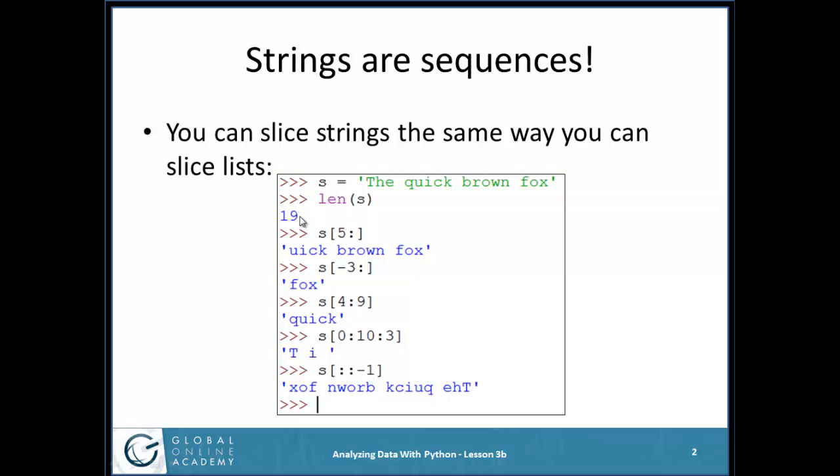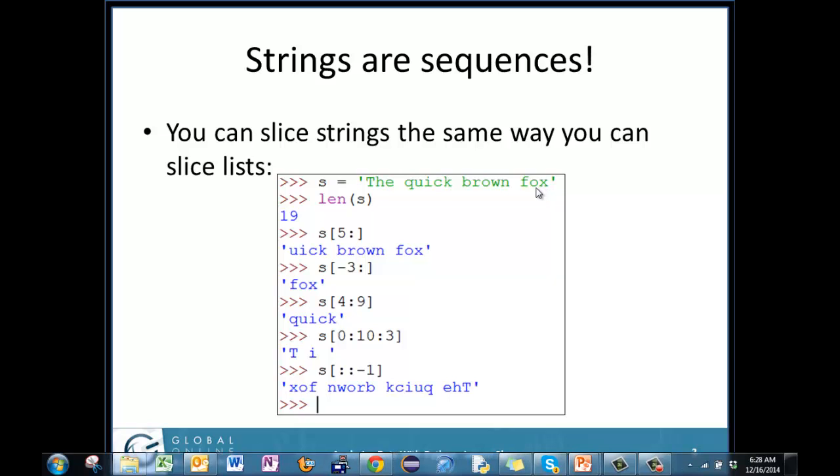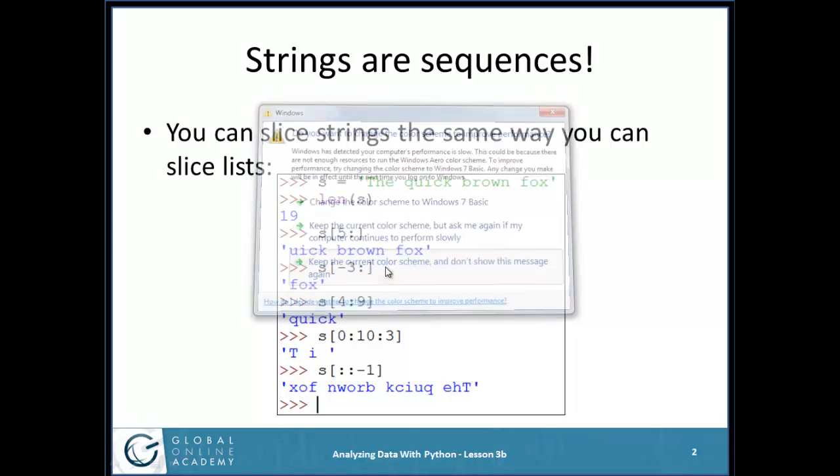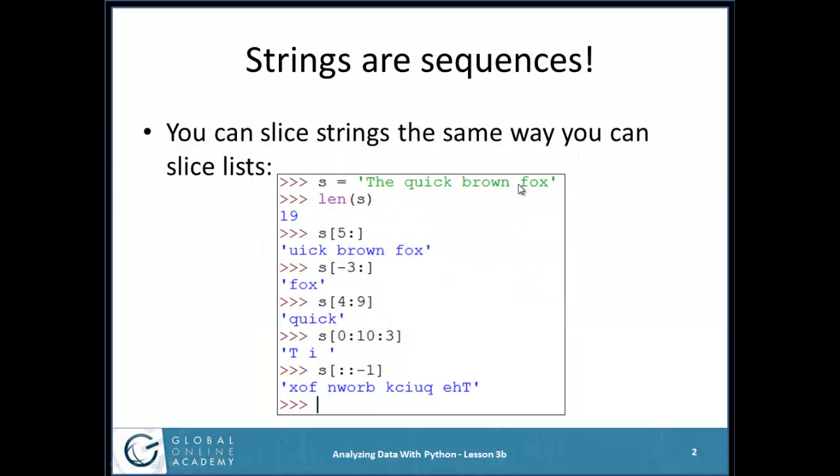Now remember, that means those characters are numbered 0, 1, 2, 3, all the way up to 18. Or I could number them starting from the right, negative 1, negative 2, negative 3, negative 4, and so on, all the way down to negative 19. So how do I slice it? Remember, our slicing notation was inside square brackets, a start colon, a stop colon, and a step value. And I can leave any of those out that I want.